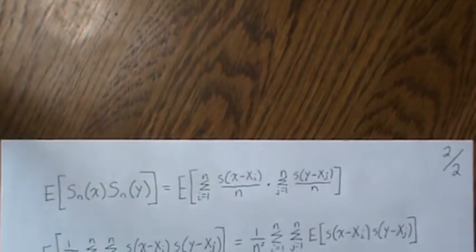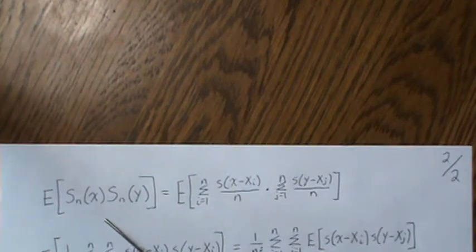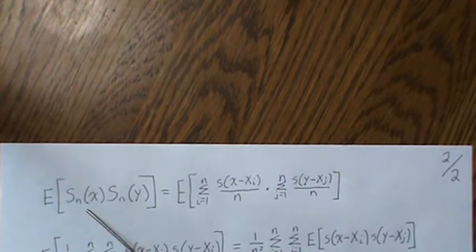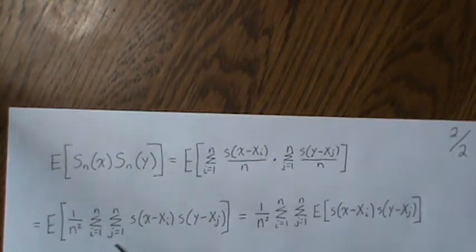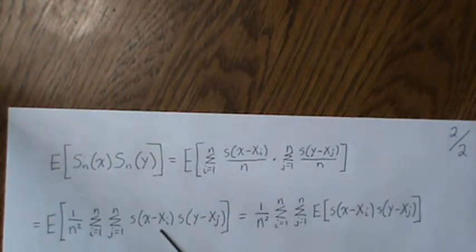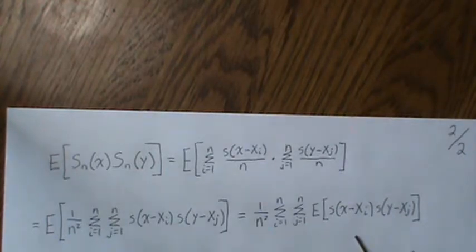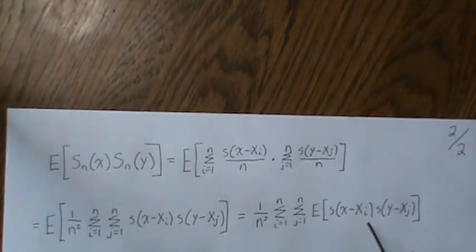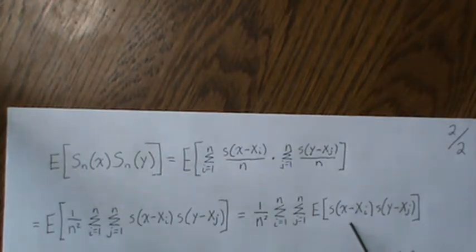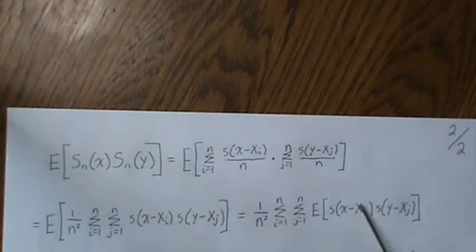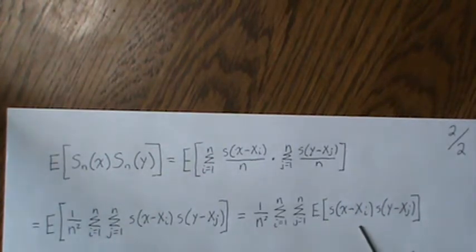Now let's look at the expected value of the product F̂(x)·F̂(y). You plug in the values for each empirical CDF, take n out front, and combine the sums. Since the expectation is a linear operator it can be taken inside the sum. Each indicator takes on 0 or 1, so if either one is 0 it doesn't contribute to the expected value — they must both be 1.